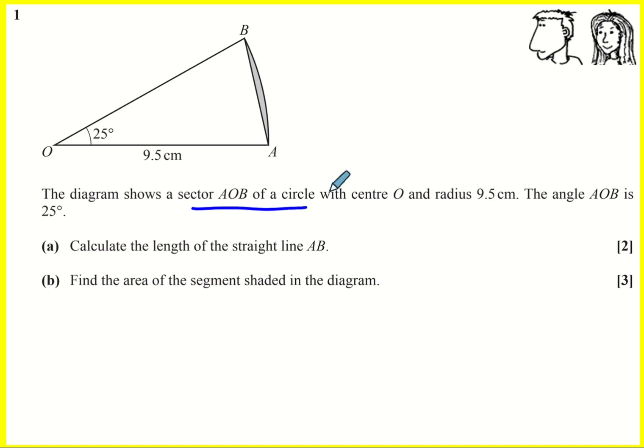In this question we have a sector of a circle with radius 9.5. Now they've labeled this bit 9.5, but this length here is also 9.5 centimeters, really important. We've got an angle in between the two sides and then we're being asked to calculate the line AB, the straight line AB.